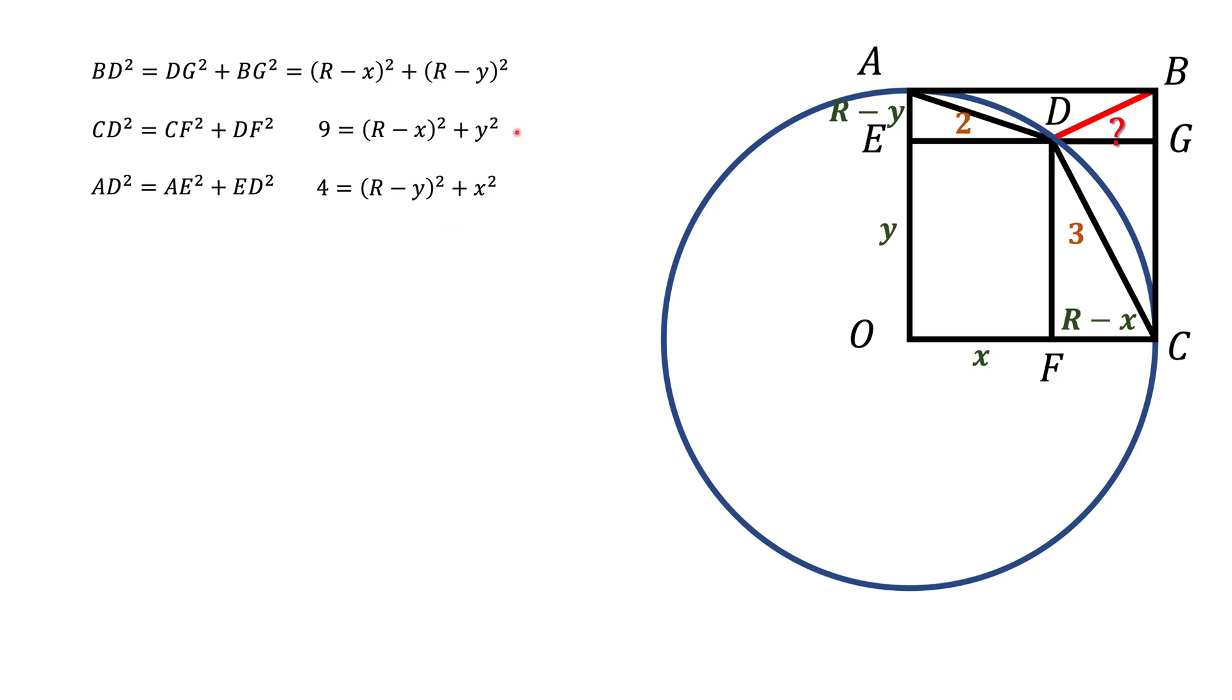We got these two equations. And what we're going to do now, we're going to add them up. And if we add them up, this is what we're going to get. Notice these two first terms on the right hand side is BD squared. That's what we need.